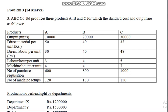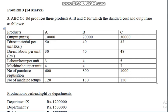The standard cost and output are as follows. Output in units: product A is 10,000 units, product B is 20,000 units, and product C is 30,000 units. Direct material cost per unit: to produce one unit the material cost is 50 rupees for product A, 40 rupees for product B, and 32 rupees for product C.